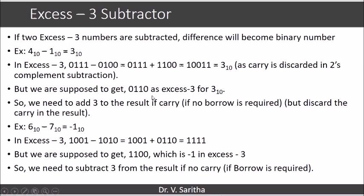But we are supposed to get 6, which is XS3 for 3. So we are supposed to get 6 but we are getting 10011. What we do is add 3 to the result if carry is present — meaning no borrow is required. So in this case, 10011 will have 3 added to 0011, giving us 6, and this leading 1 is discarded as we discard carry in 2's complement subtraction.